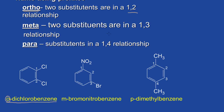Meta is where the two substituents are in a 1-3 relationship. Here we have a nitro group and a bromine group in a 1-3 position, so this would be called meta-bromonitrobenzene. We use a lowercase m to show the meta position. Then we have para, where the substituents are in a 1-4 relationship — so this would be p-dimethylbenzene, where we have two methyl groups.